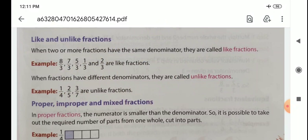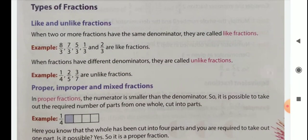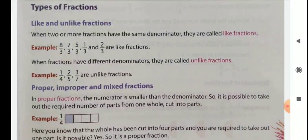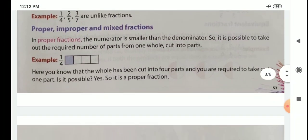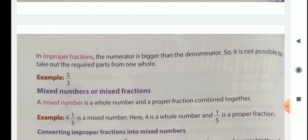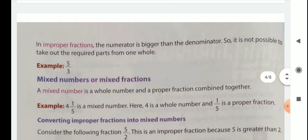For a proper fraction, for example 1 by 4, it is possible to take out the required number of parts from one whole cut into parts. But in an improper fraction, it is not possible to take out the required parts from the whole number, because here the numerator is bigger than the denominator. For example, 5 by 3.